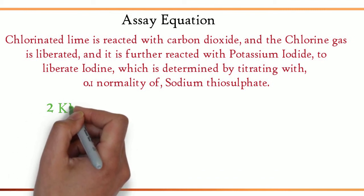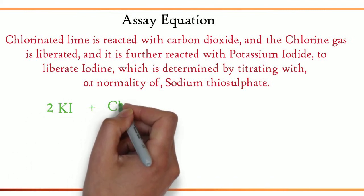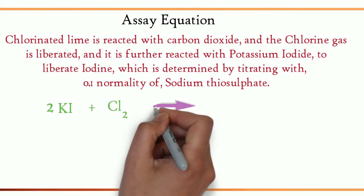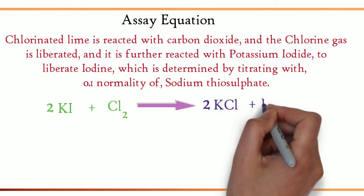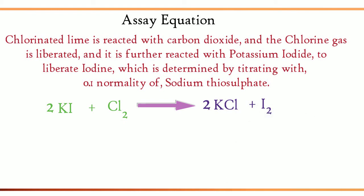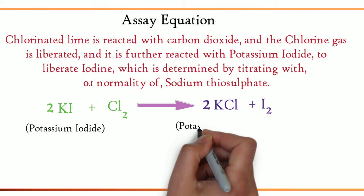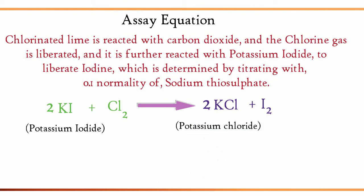The next equation is 2KI plus Cl2 gives 2KCl plus I2. Potassium iodide reacts with chlorine to produce potassium chloride and iodine.